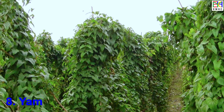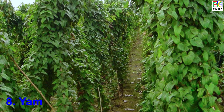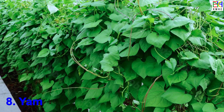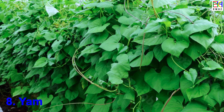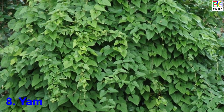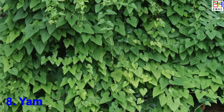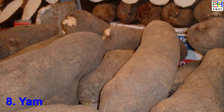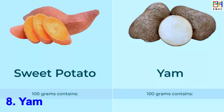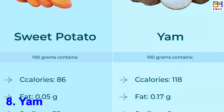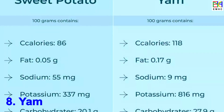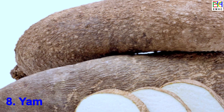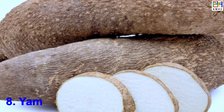Yam is believed to have originated in Africa, particularly West Africa. Today, the largest producers of yam are Nigeria, Ghana, Côte d'Ivoire, Benin, and Cameroon. Global production of yams exceeds 70 million metric tons annually. Yam is a good source of complex carbohydrates, dietary fiber, and various vitamins and minerals, including vitamin C, potassium, and manganese.